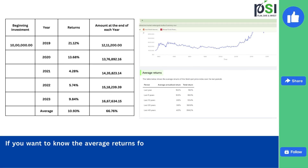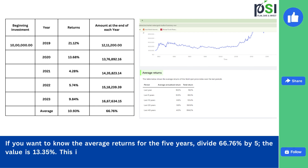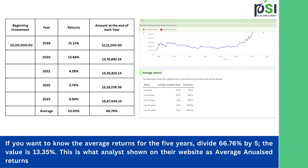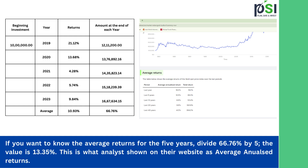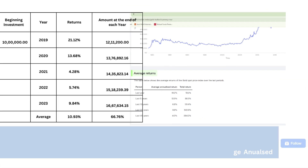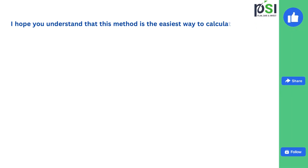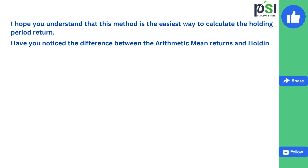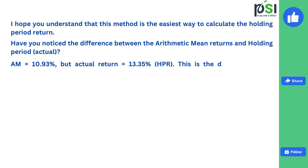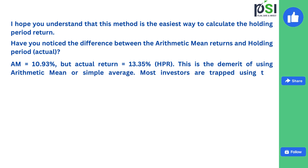If you want to know the average returns for the 5 years, divide 66.76% by 5. The value is 13.35%. This is what analysts show on their website as average annualized returns. The difference between arithmetic mean and holding period return is notable: arithmetic mean is 10.93%, but actual annualized return is 13.35%, also called the holding period return. This is the demerit of using arithmetic mean or simple average — most investors are trapped using this methodology.